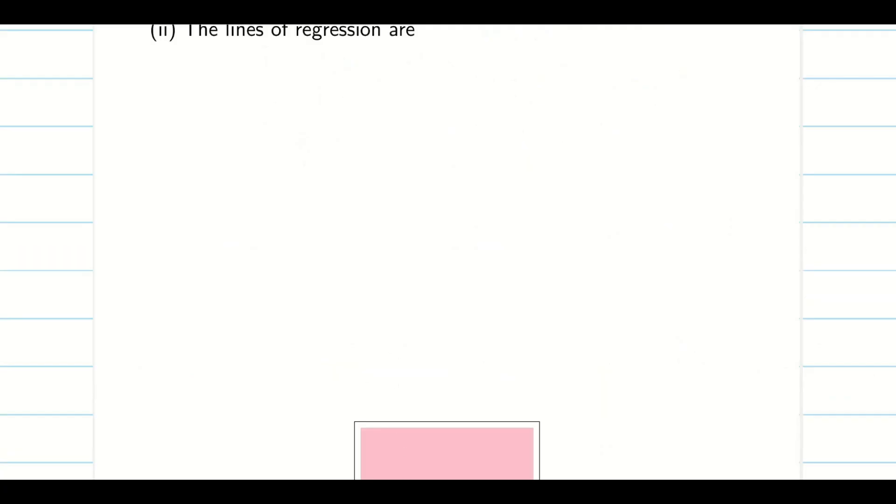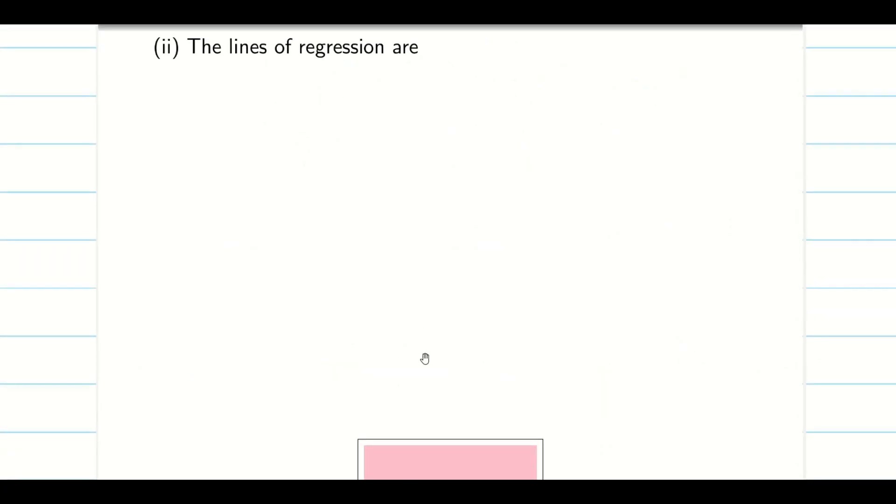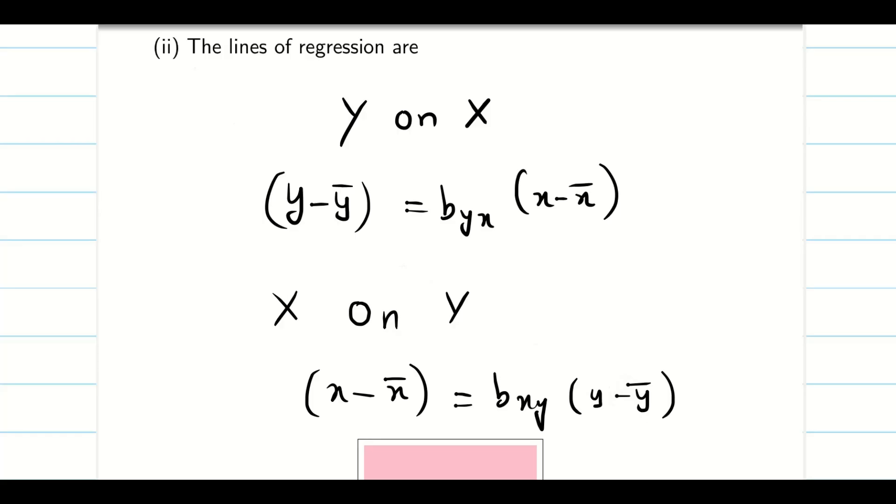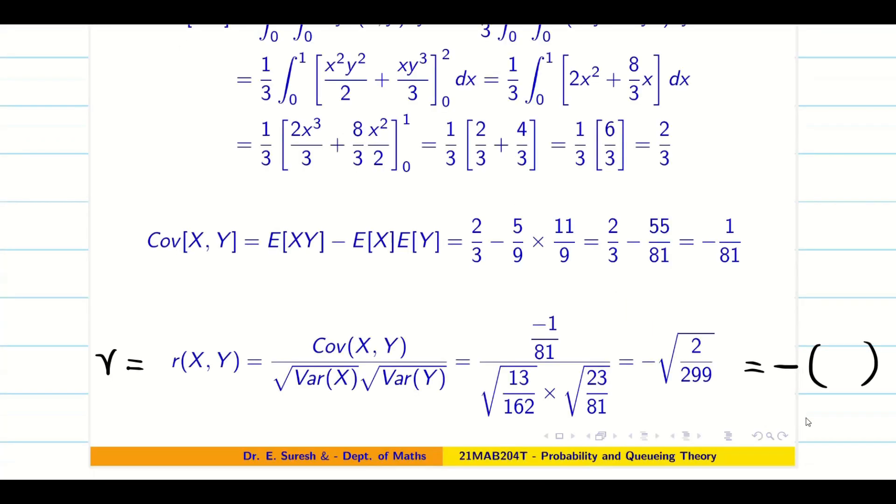Next our target is to find the regression lines. You remember the regression lines, either y on x or x on y. Whenever I say y on x, it is y minus y bar equals byx times (x minus x bar). If it is x on y, x minus x bar equals bxy times (y minus y bar). Now byx is sigma y by sigma x times r.